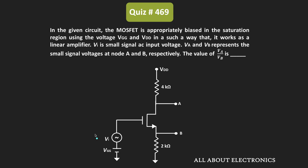Hey friends, welcome to the YouTube channel all about electronics. In this question we have been given a MOSFET based circuit, and we have been given that using these biasing voltages the MOSFET is appropriately biased in the saturation region in such a way that it can be used as a linear amplifier.